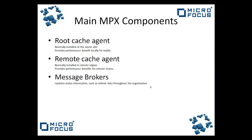The second component is the remote cache agent. This cache agent is located in one or more remote regions. In this example, the remote cache agent is located in Ireland. The remote cache agent is updated with all server file data and is accessed by the remote team rather than communicating directly with the server.